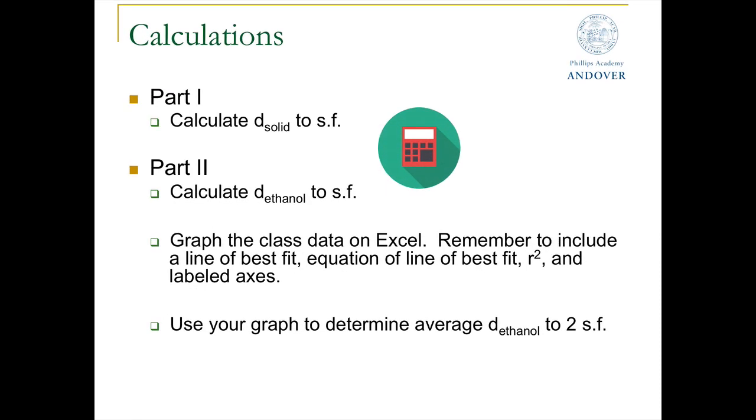Now, here are the calculations that you need to do for homework. For part one, you will calculate the density of the solid to the appropriate number of significant figures. For part two, you will calculate the density of ethanol to the appropriate number of significant figures. This reflects your sample of ethanol, so the mass and the volume. So you want to take a look at that calculation. Then you will graph the class data on Excel, and you want to include the line of best fit, the equation of the line, the R-squared value, and label your axes. Again, if you don't know how to do this, there's an Excel tutorial available. And finally, use your graph to determine the average density of ethanol, and that's just reading the slope and reporting it to your reader. Good luck.